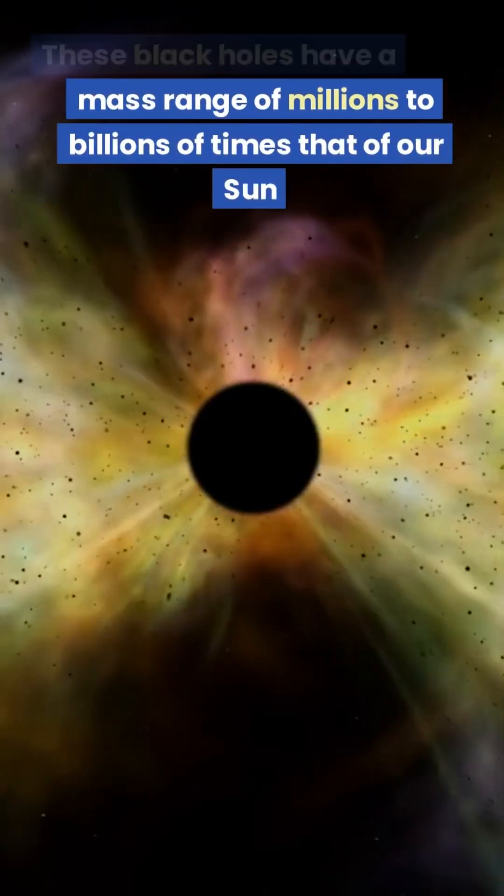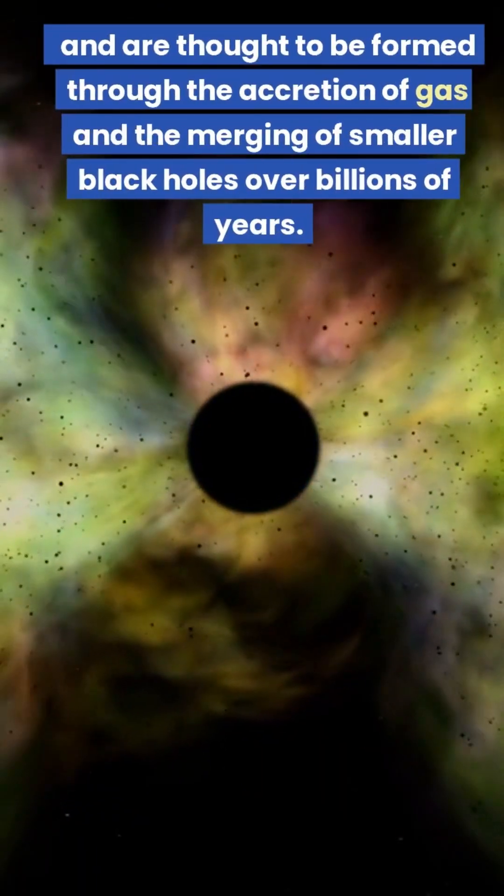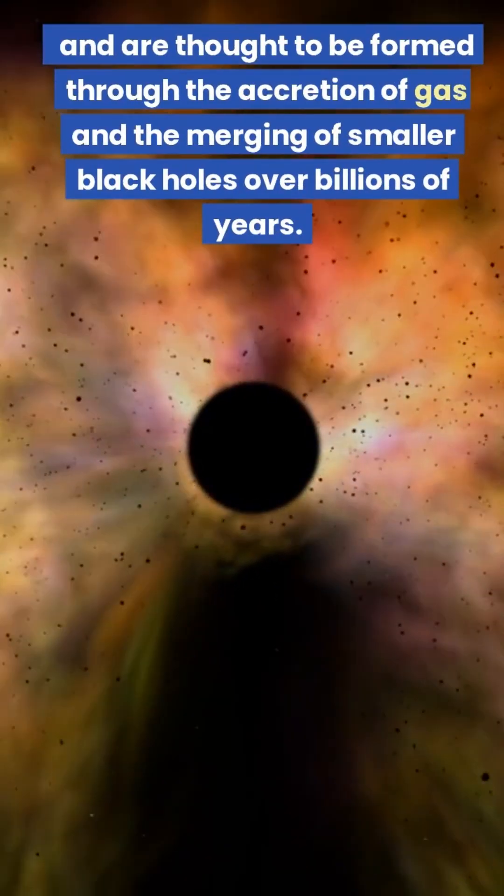These black holes have a mass range of millions to billions of times that of our sun and are thought to be formed through the accretion of gas and the merging of smaller black holes.